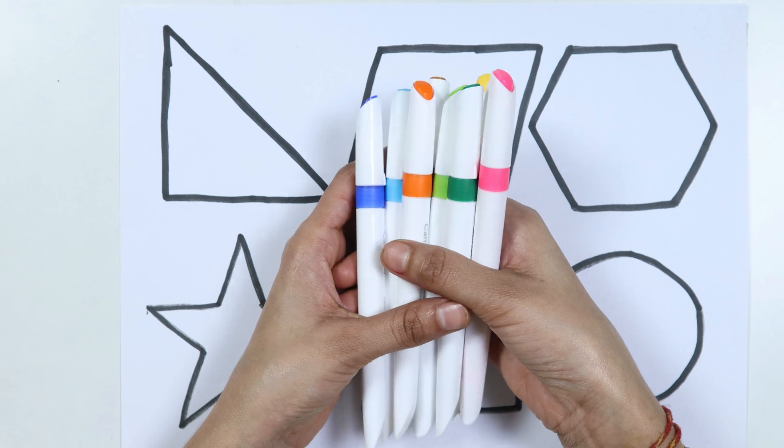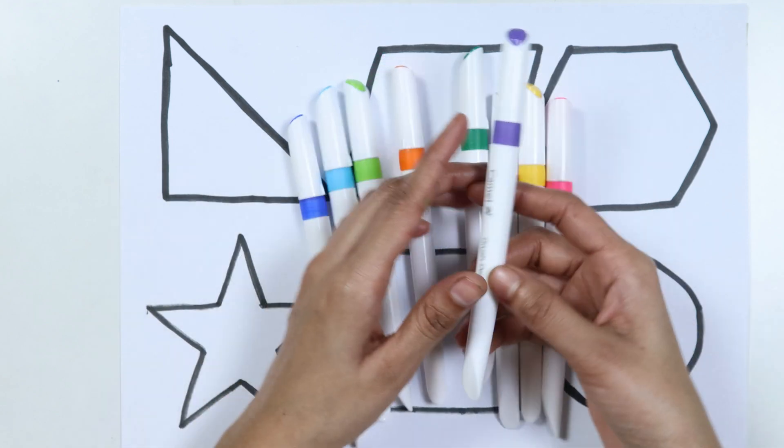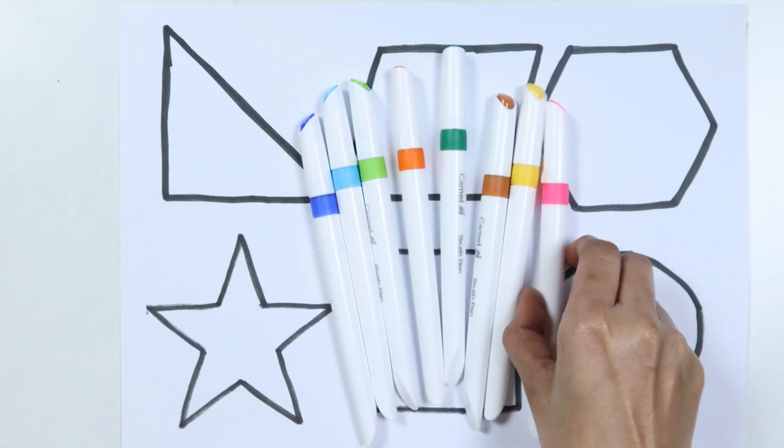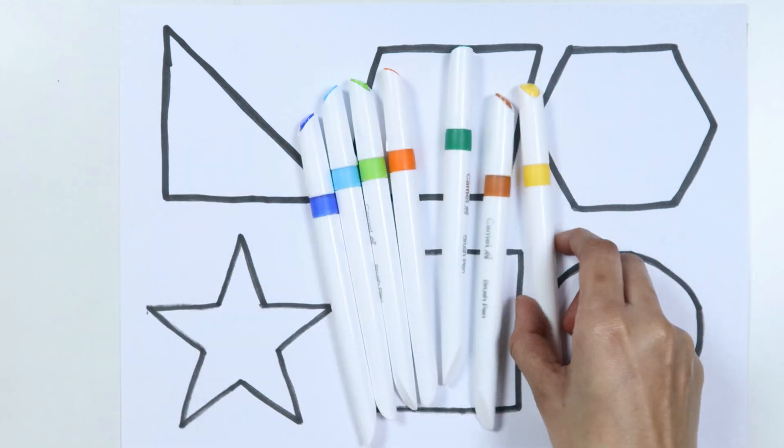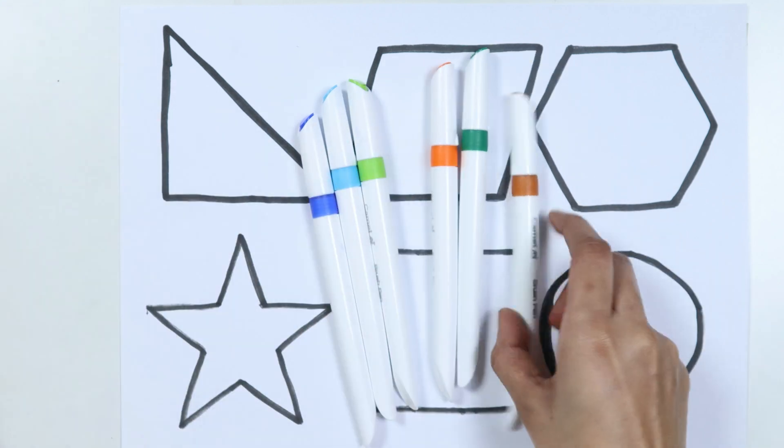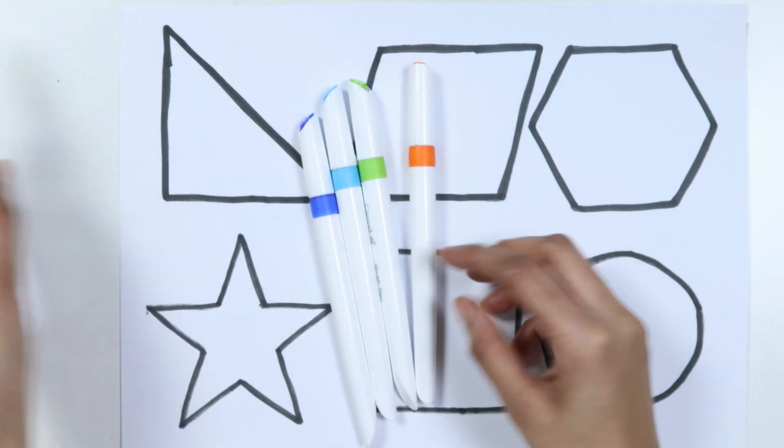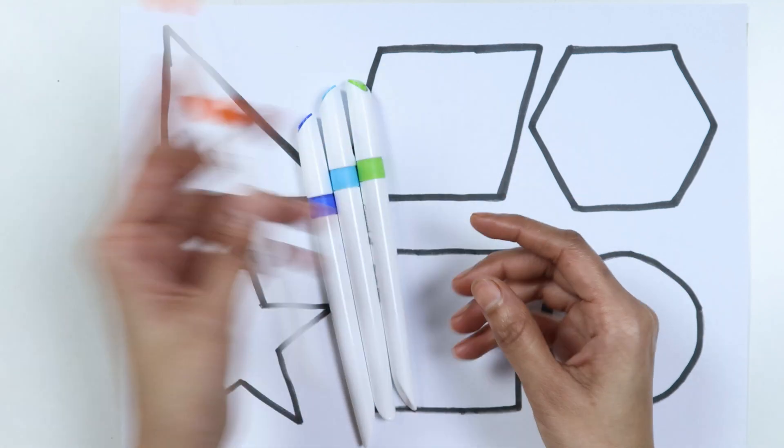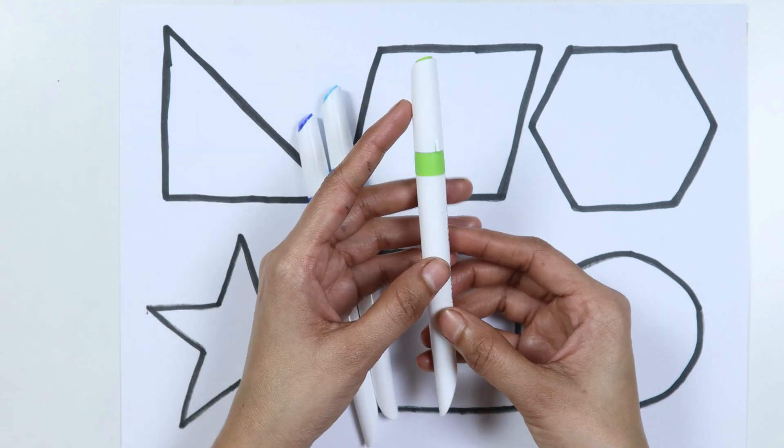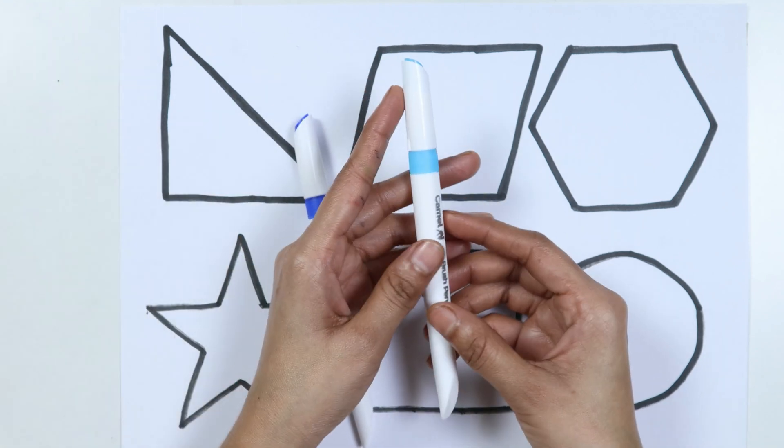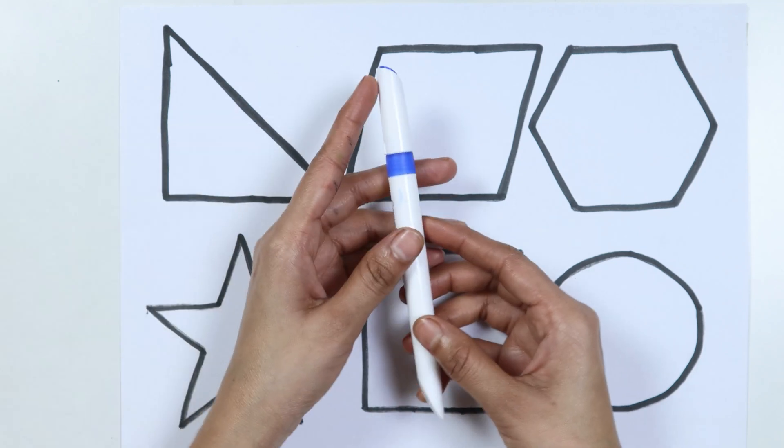Let's learn some colors. Purple color, pink color, yellow color, brown color, dark green color, orange color, light green color, sky blue color, blue color.